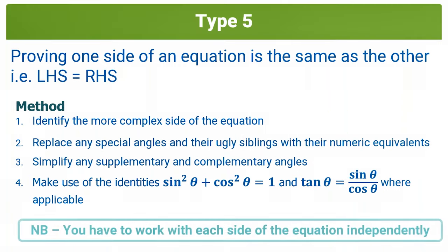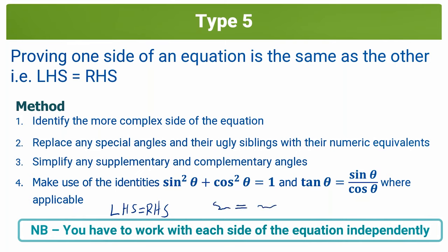Just a note: when you're doing a type 5 question, you have to work with each side of the equation independently. You can't start the question with an equal sign in the middle and work your way down with something on both sides. You have to choose one side — either the left or the right — and work with that side only to get it equal to the other side.